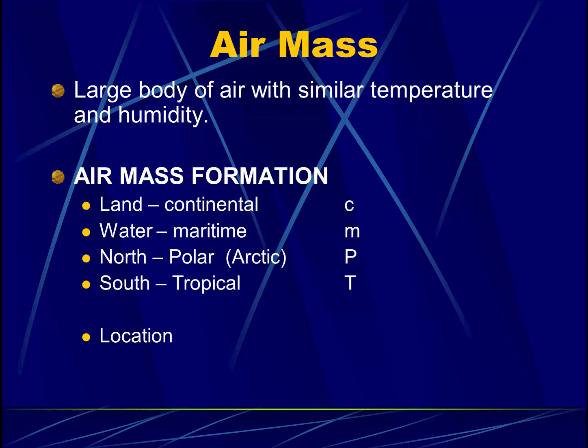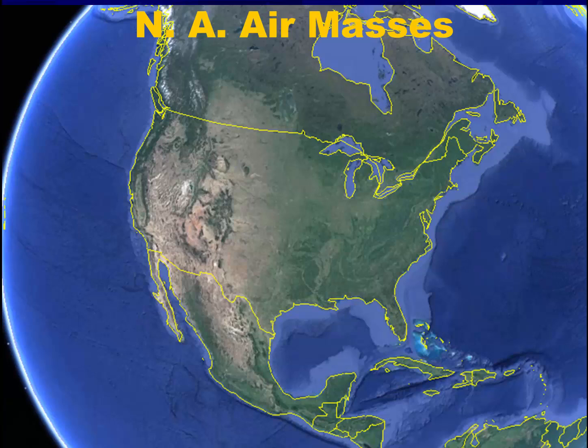We may also be more specific and talk about the five locations that could affect the United States: the Pacific, Atlantic, Gulf of Mexico, Canada, or Mexico. For North America, a dominant air mass is the cold, dry continental polar — or continental polar Canadian — air mass. This brings cold weather to much of the center of our country.